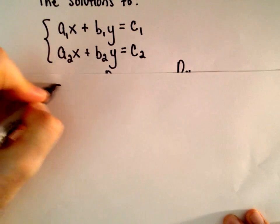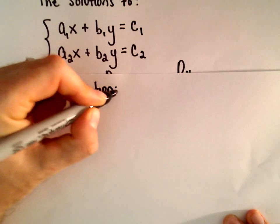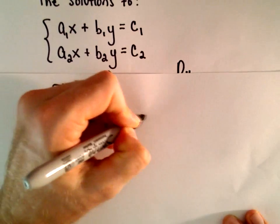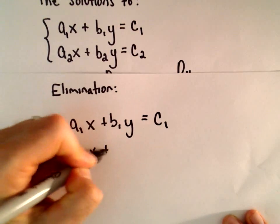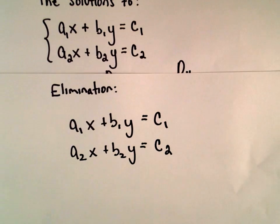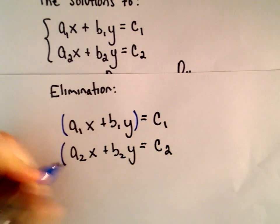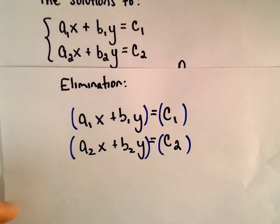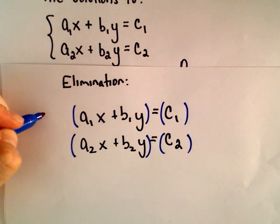What I'm going to do to prove this is just use elimination by addition. So we've got a1x plus b1y equals c1, and a2x plus b2y equals c2. I'm going to eliminate the x's first, and then we can come back and do the same thing to eliminate the y's. To eliminate the x's, we need the same coefficients but opposite signs.